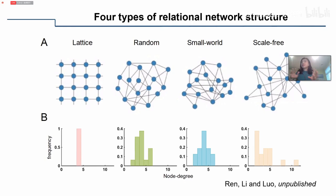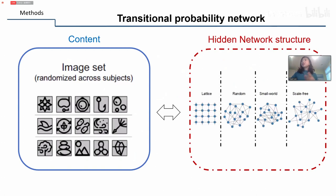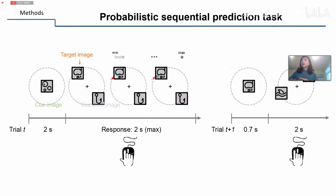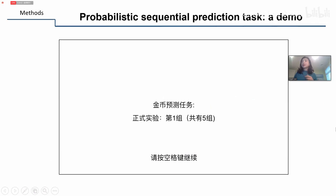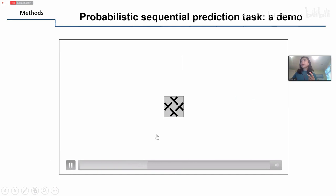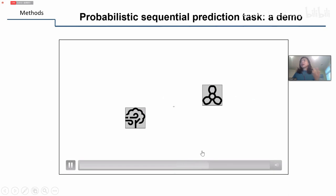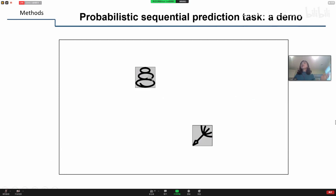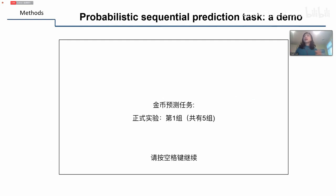Instead of using the community network, we choose other networks: lattice network, random network, small-world network, and scale-free network. All four networks have the same number of nodes — 16 nodes — and the same average degree of around 4. So the four networks are comparable in many parameters, but the only difference is the structure. We did the same sequential prediction task with 16 images across four different groups of subjects, 15 subjects per group. By looking at prediction across trials, we can determine which network is easier to learn — its learnability.